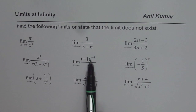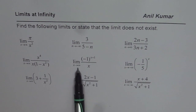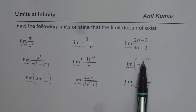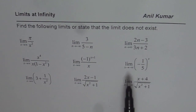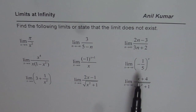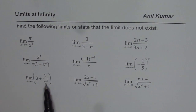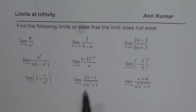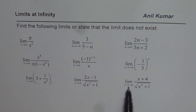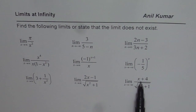Limit of negative 1 to the power of x plus 1, divided by x, when x approaches infinity. Limit of negative 1 over 5 to the power of x when x approaches negative infinity. Limit when x approaches infinity for 3 plus 1 over x squared. Limit when x approaches infinity for 2x minus 1 divided by x squared plus 1, and limit when x approaches negative infinity for x plus 4 divided by the square root of x squared plus 1.